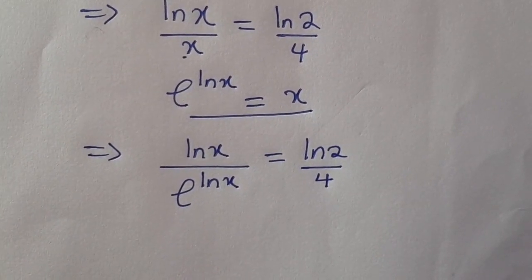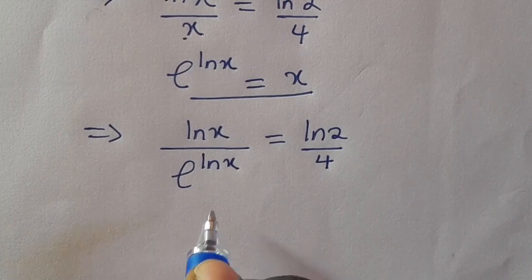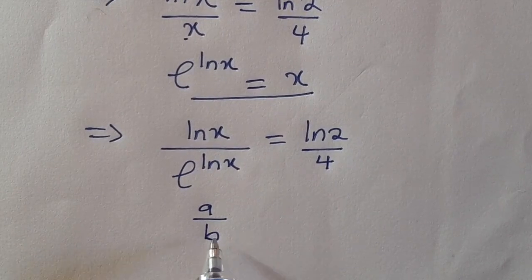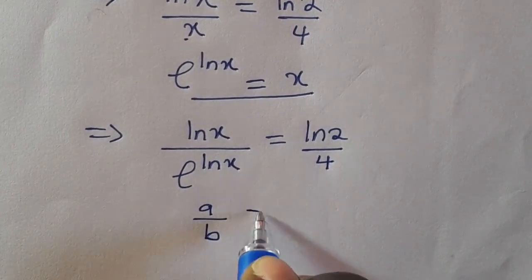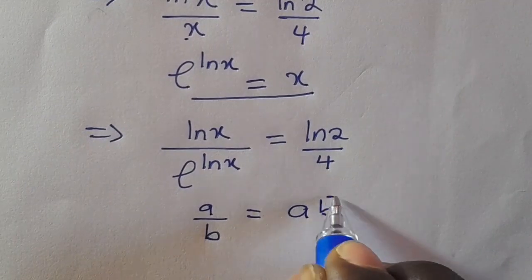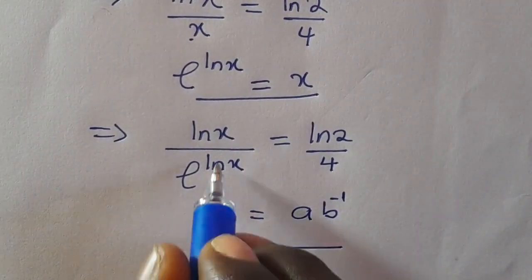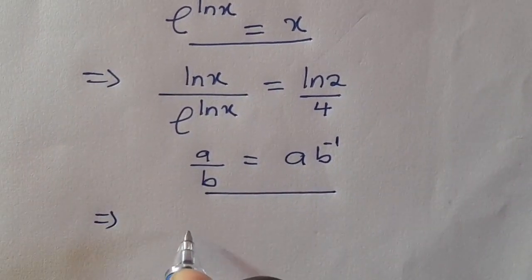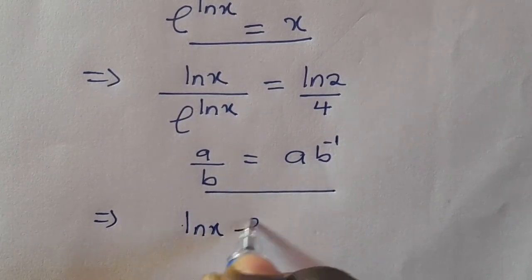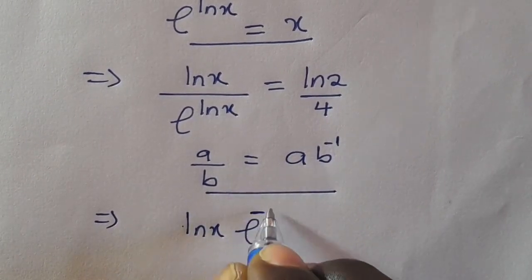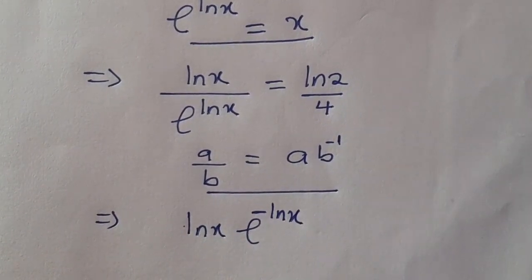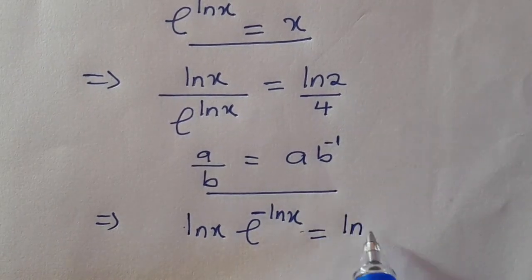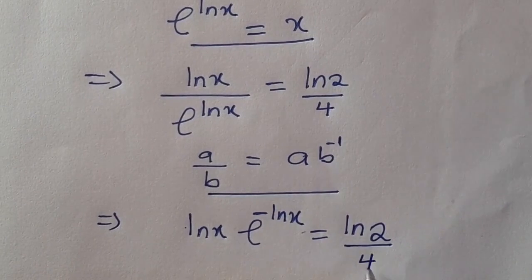Now, we have to remember that according to the law of indices, when you have a divided by b, we can have it to be a times b raised to power minus 1. So by applying this here, we can have this to be ln(x) times e raised to power minus ln(x) equals ln(2) divided by 4.